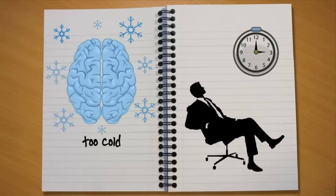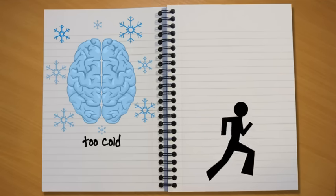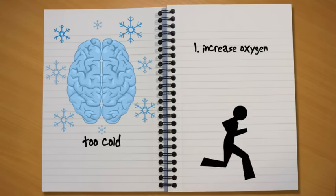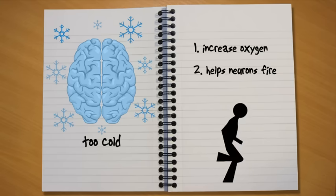Sitting still for long periods of time can affect your ability to concentrate and study. It's good to take brain breaks where you do some physical movement or exercise. This will increase the oxygen in your bloodstream, which will help the neurons to fire.